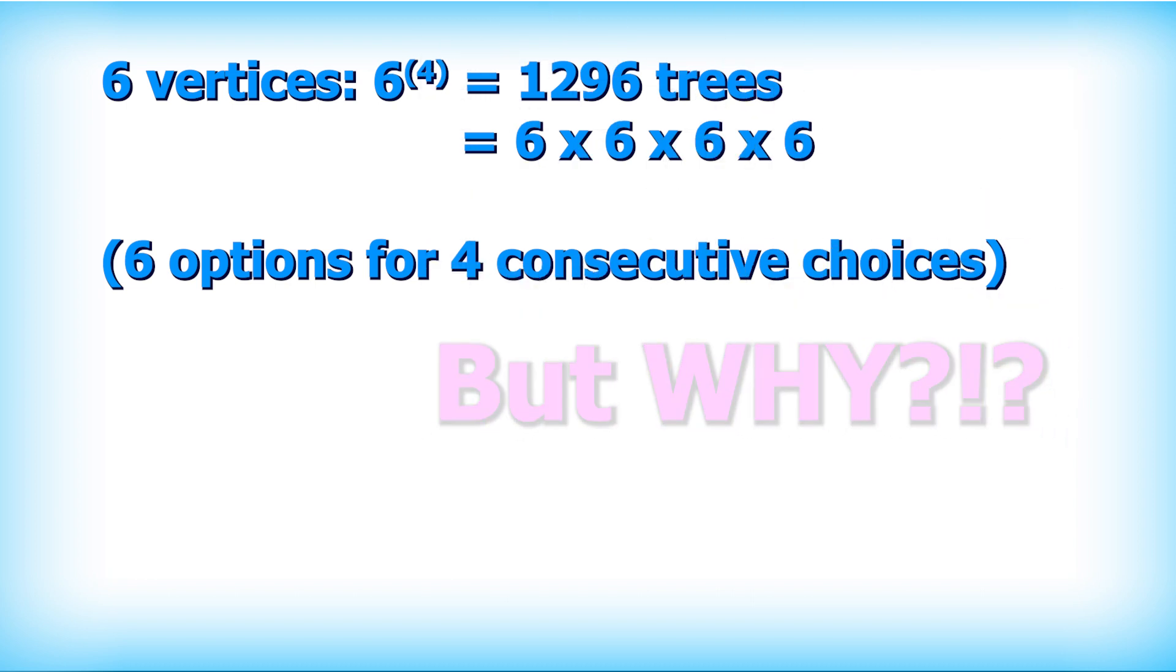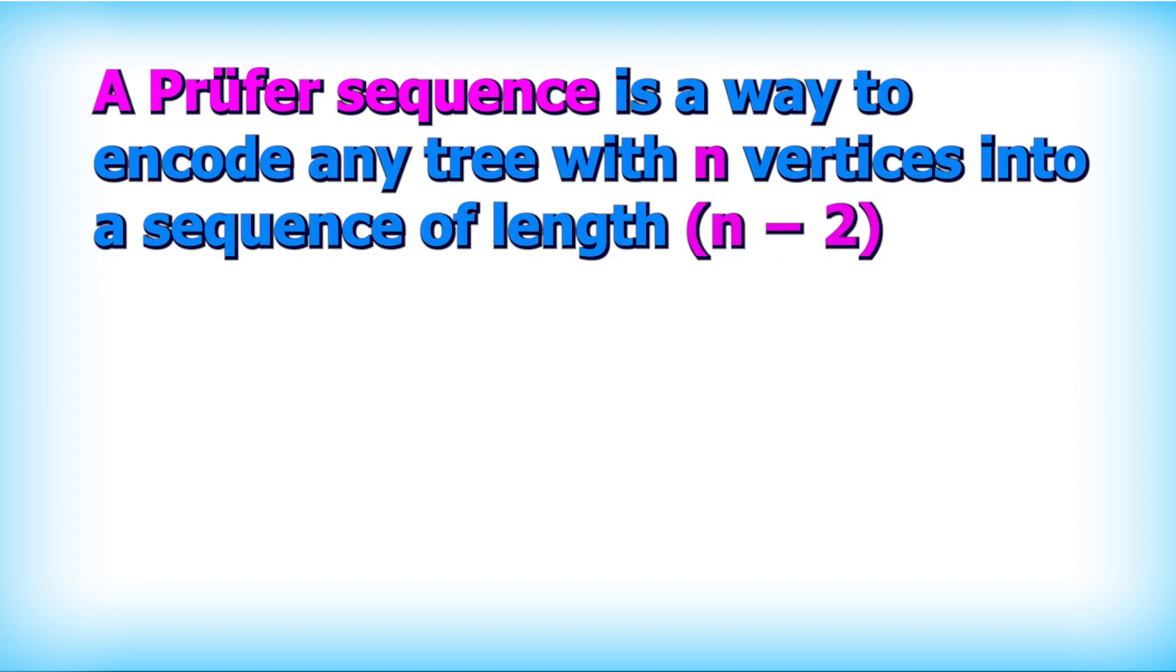And this is where the proof of sequence comes in. A proof of sequence is a clever way to encode a tree, any tree, into a sequence of length n minus 2 where each number can take any of the values from 1 to n. So some examples are shown here.